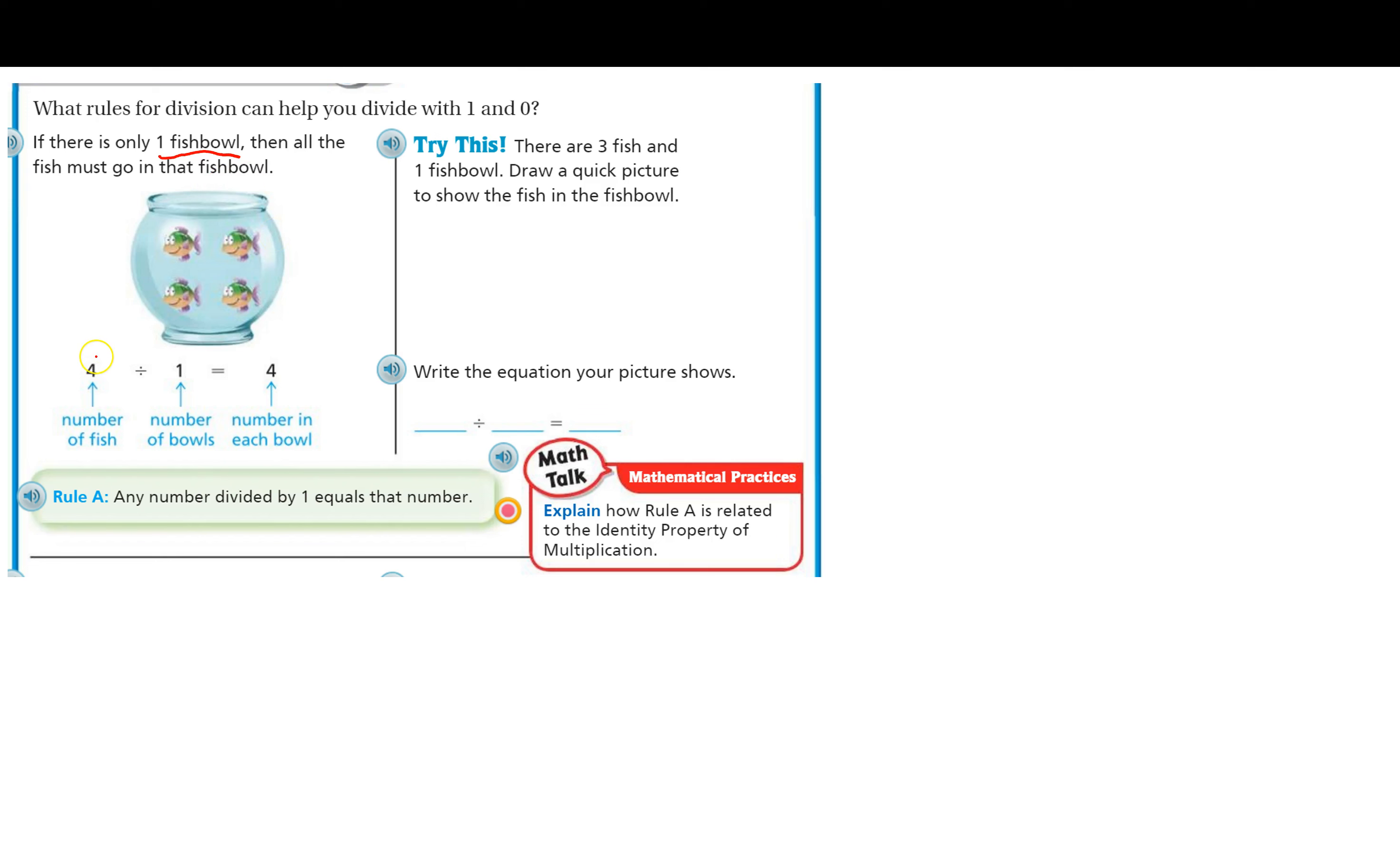So the first number here represents the number of fish, 4. There's 1, 2, 3, 4. Number of bowls, there's only 1, this one bowl. And the number of fish in each bowl, well, since there's only one bowl, the answer is 4.